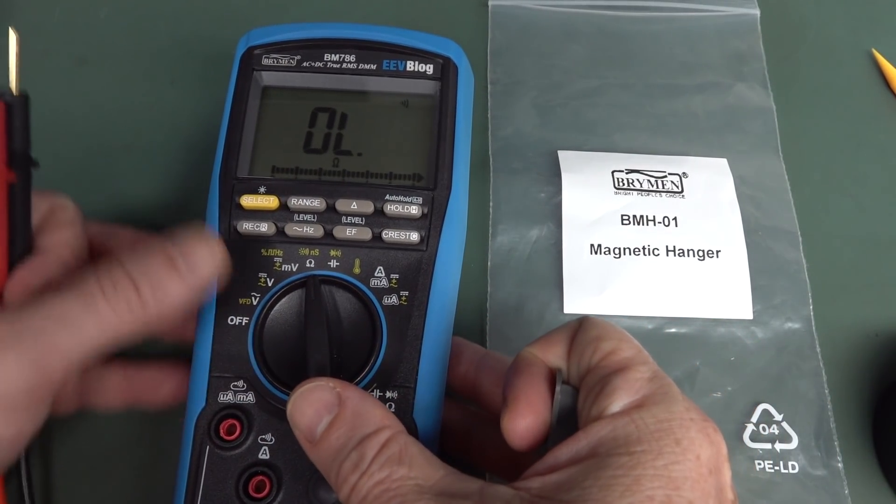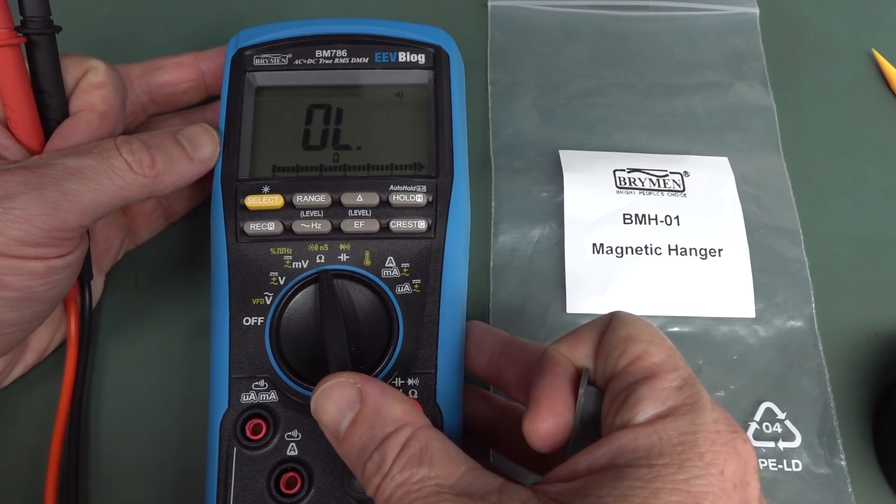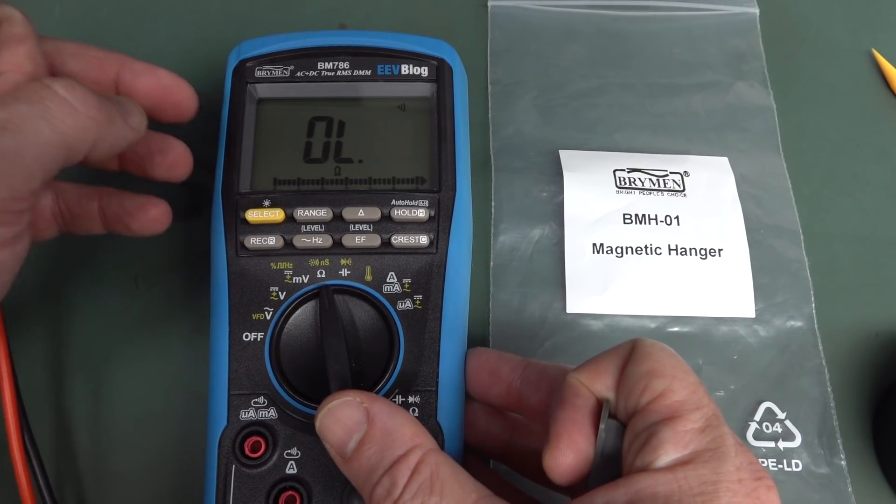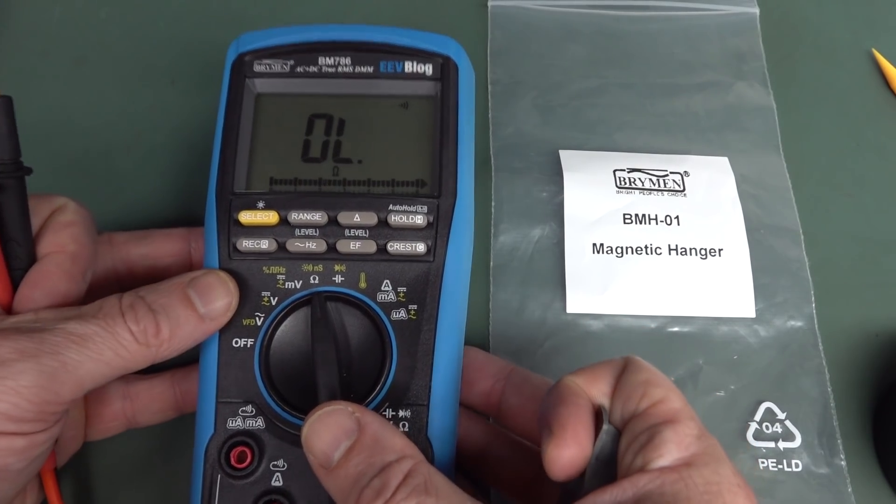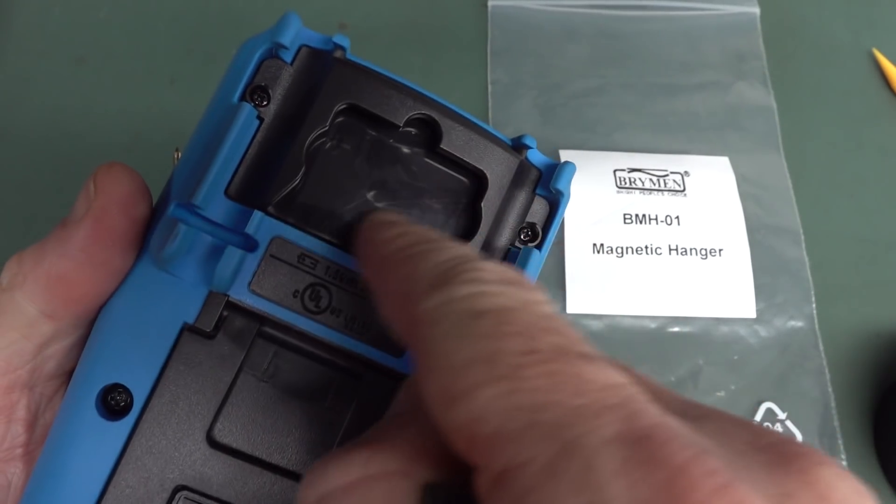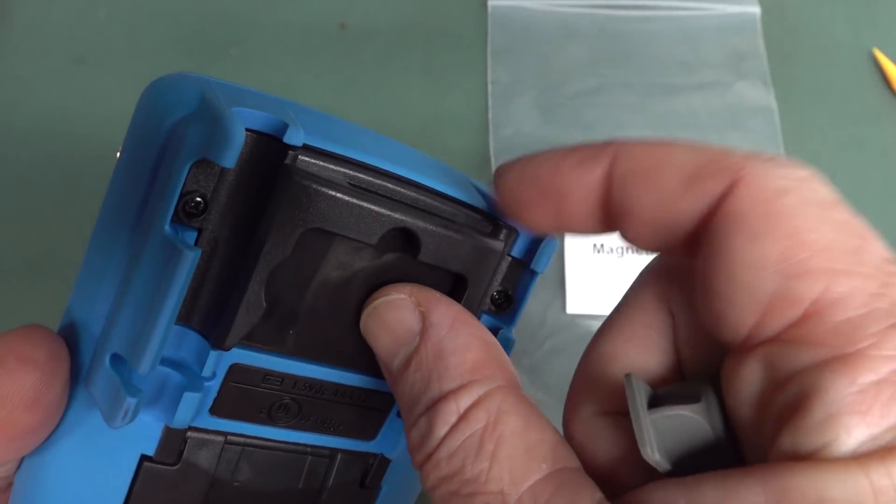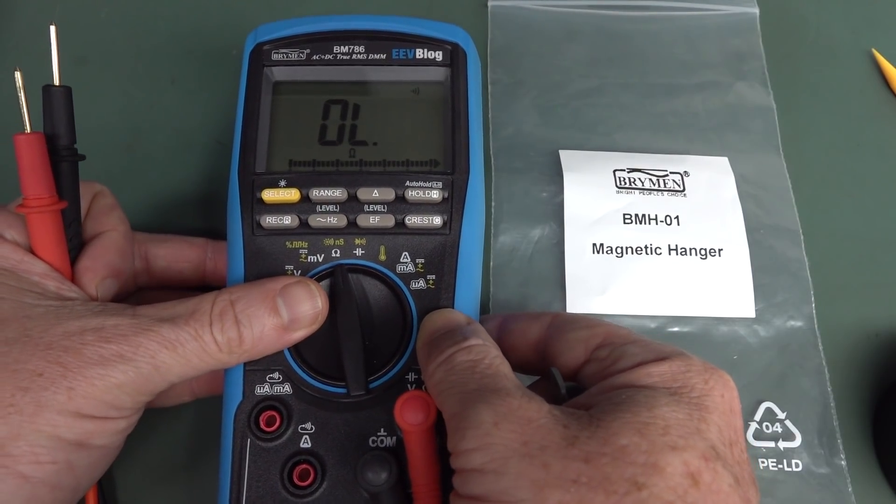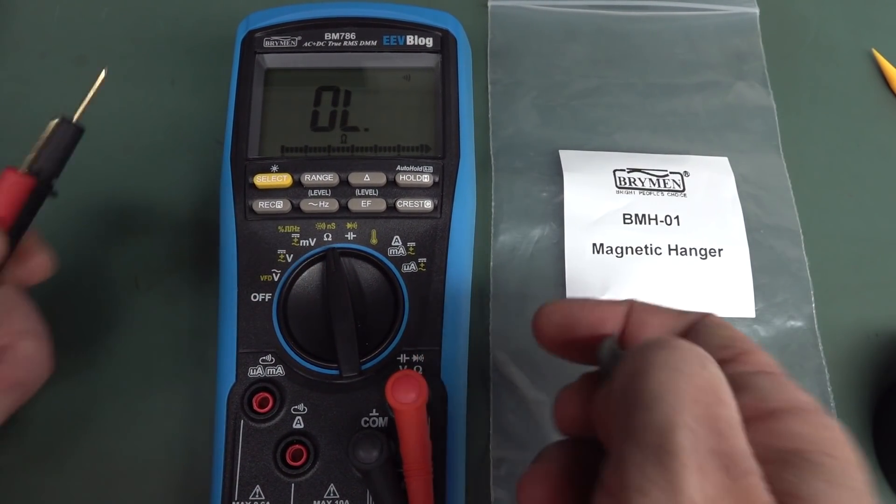Hi, just a quick video response to somebody on the EEV blog forum who found that there's an issue with the BM786 meter with the magnetic hanger on the back, which is designed to hang into here. It's got like a strap hanger thing.